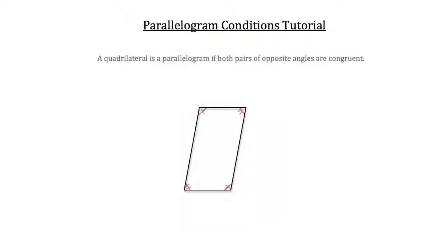The first condition is that a quadrilateral is a parallelogram if both pairs of opposite angles are congruent. The angles referred to here are this pair of opposite angles, as indicated by the single red congruency tick mark, or this pair. Both pairs would have to be congruent in order for a quadrilateral to be a parallelogram.